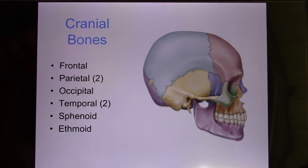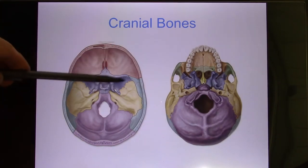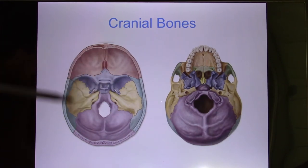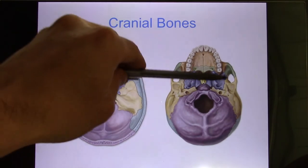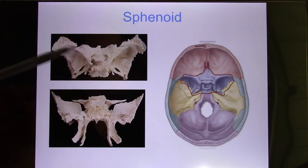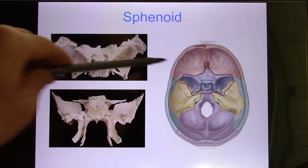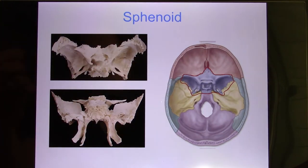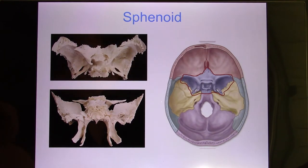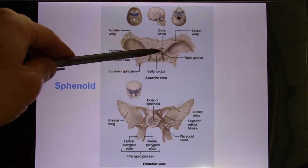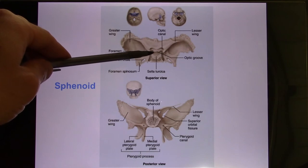If you take the skull open, the sphenoid looks like a butterfly. The brain sits on it. It has a central depression called the sella turcica, which is where your pituitary gland — one of the most important endocrine glands — sits. The sphenoid bone has two wings and the sella turcica in the center.